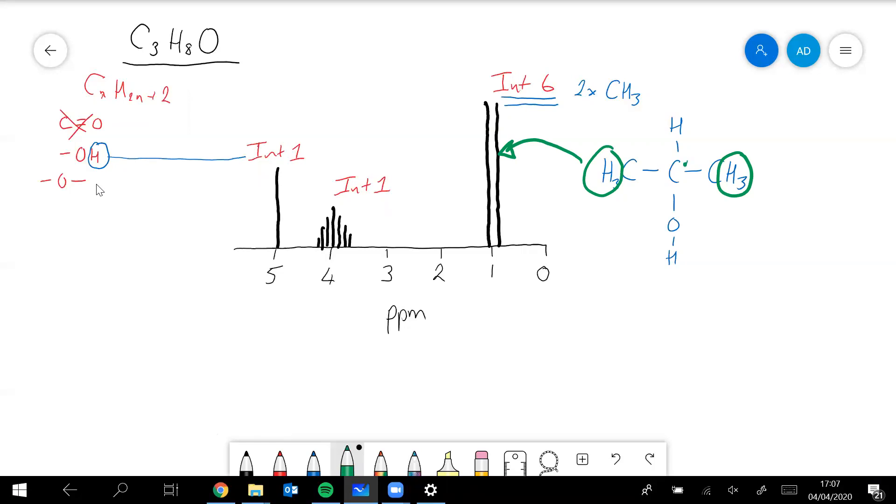The ppm value is correct as well because it's about one, and it should be because these are not near any, they're not next to the oxygen. We've already established, I think, that this is that peak there, the hydroxide hydrogen.